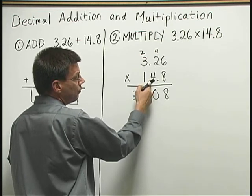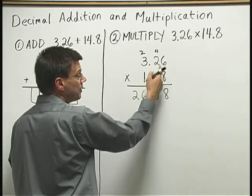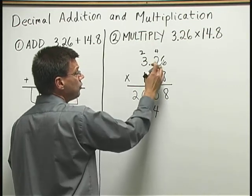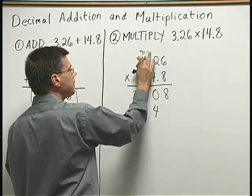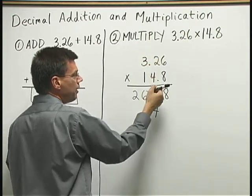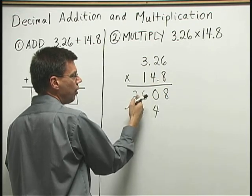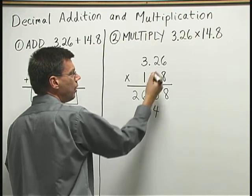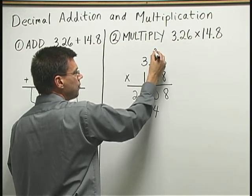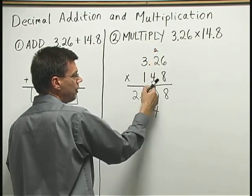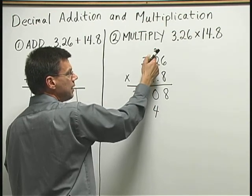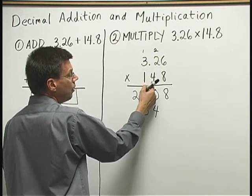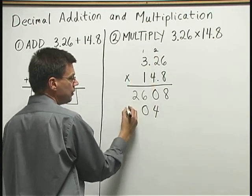Next, I move over to the 4. 4 times 6 is 24. Write down the 4, carry the 2. By the way, I like to erase the numbers that help me out in the first row when I get to my second row. 4 times 2 is 8, plus 2 is 10. Write down a 0, carry the 1. 4 times 3 is 12, plus 1 is 13.